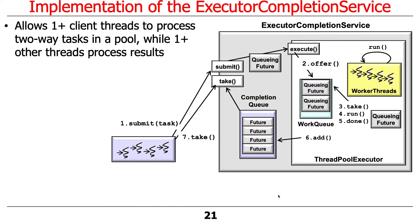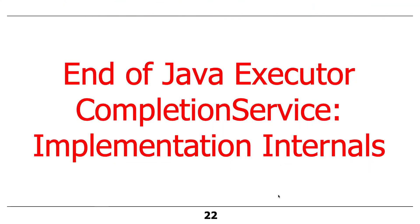In steady state, you can imagine a pipeline of things doing the processing in parallel. Assuming you've got plenty of cores on your machine, you'll be able to do a lot of work in parallel. And that's the end of that discussion.